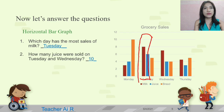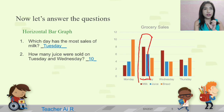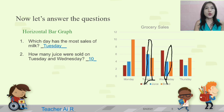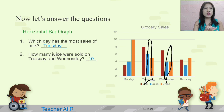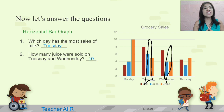Next question: how many juices were sold on Tuesday and Wednesday? We're going to look for the juice, which is in blue color. For Tuesday, it is six. And for Wednesday, it is four. Six plus four is ten. Therefore, ten juices were sold.